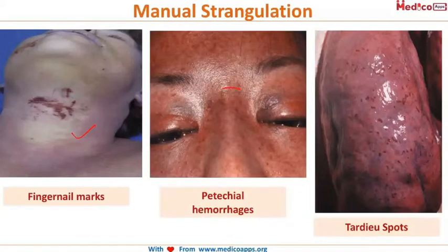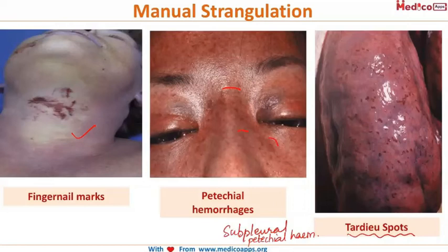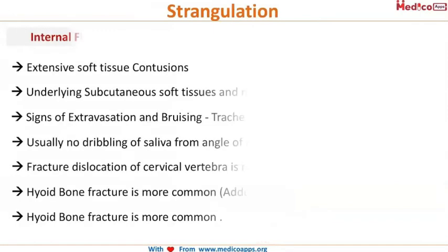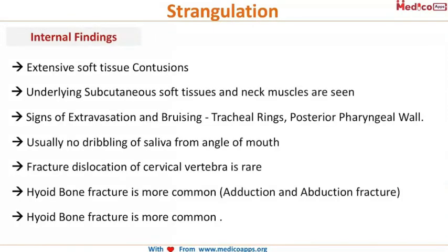You can see the fingernail marks, petechial hemorrhages all over the face, and Tardieu spots — which are subpleural petechial hemorrhages. All of these are seen in manual strangulation.